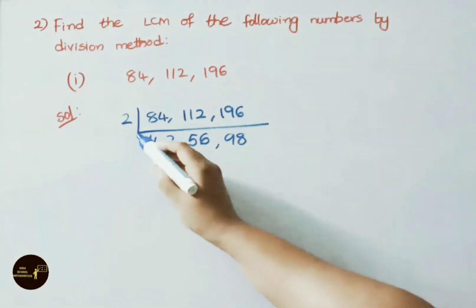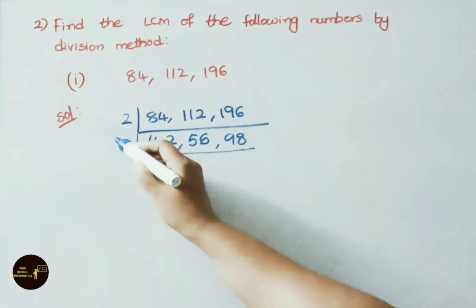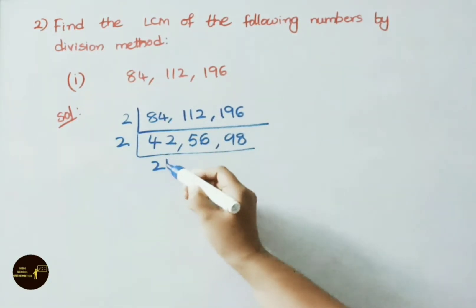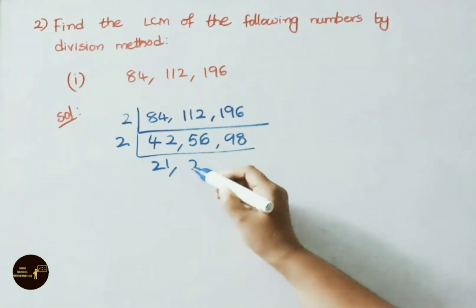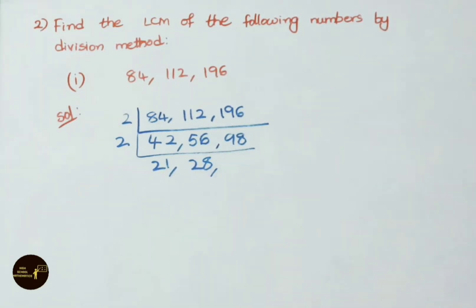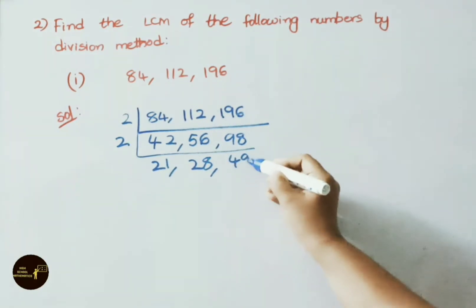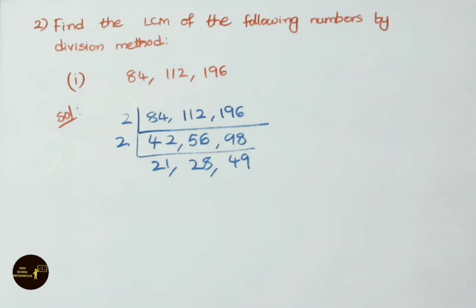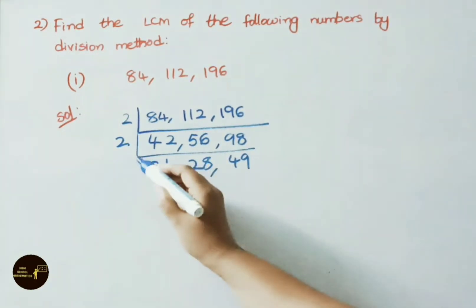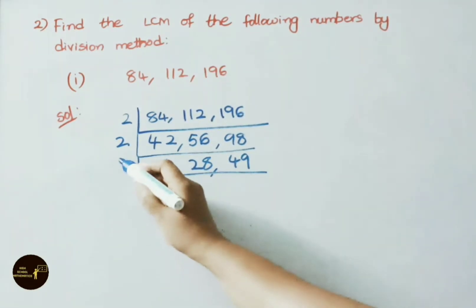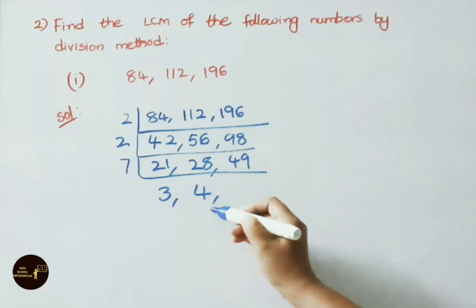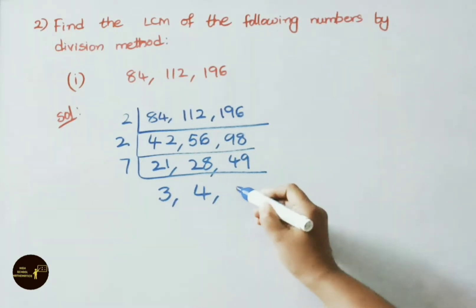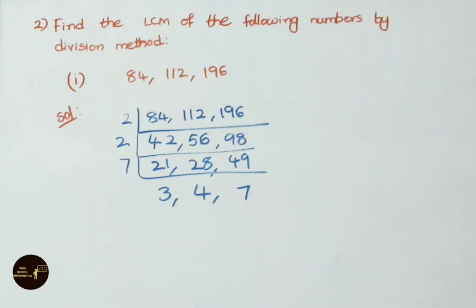Again divide by 2: 2 × 21 = 42, 2 × 28 = 56, 2 × 49 = 98. Now divide these 3 numbers by 7: 7 × 3 = 21, 7 × 4 = 28, 7 × 7 = 49.